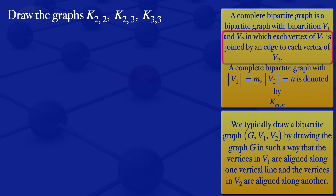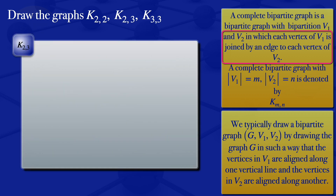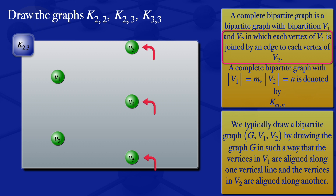I now move on to K2,3. For K2,3, the first subset has two vertices and the second subset has three vertices. I draw the first subset with vertex 1 and vertex 2, and the second subset with three vertices: V3, V4, and V5. For each vertex in subset V1, we join it by an edge to each vertex of subset V2. Looking at V1, we draw edges: V1 and V3, V1 and V4, V1 and V5.